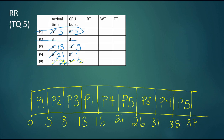Now we need to do the calculations. The response time is a one-time measure from when a process first arrives to the first time it gets on the CPU. P1 arrived at time zero and first got on the CPU at time zero, so P1's response time is zero.